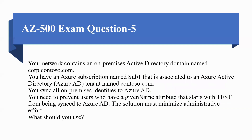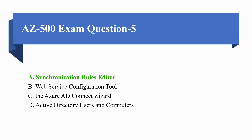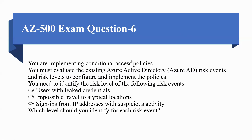Your network contains an on-premises Active Directory domain named contoso.com. You have an Azure subscription named Sub1 associated to an Azure Active Directory tenant named contoso.com. You have synced all on-premises identities to Azure AD. You need to prevent users who have a given name attribute that starts with 'tasks' from being synced to Azure AD. The solution must minimize administrative effort. The options are: A) Synchronization Rule Editor, B) Web Service Configuration Tool, C) Azure AD Connect Wizard, D) Active Directory Users and Computers. The correct answer is Synchronization Rule Editor.